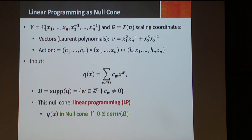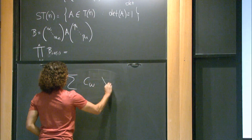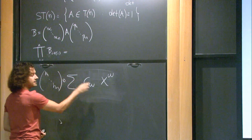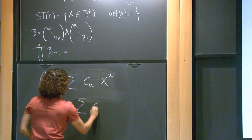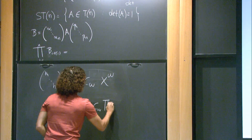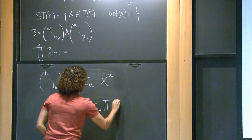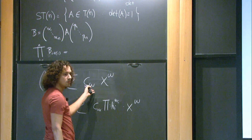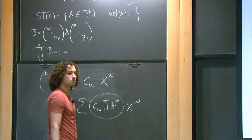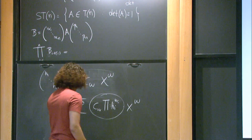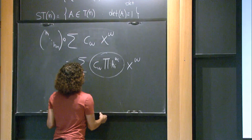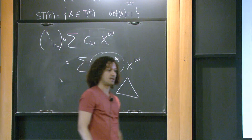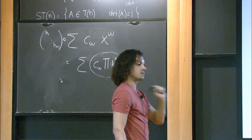Let me show the action explicitly. I have my sum of c_w · x^w. Once I apply some group action (h_1, ..., h_n), I get the sum over w of the product of h_i^{w_i} times c_w times x^w. The only way to drive this polynomial to zero is if all these coefficients go to zero. Because we're taking orbit closures, h_i can go to zero — that's why the closure is there.